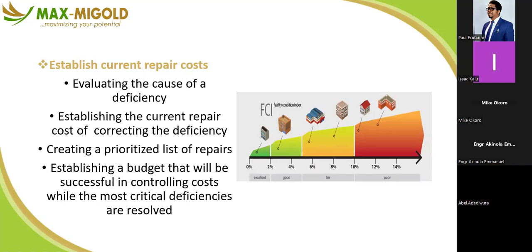You'll be able to prioritize when you do your assessment. Establishing a budget that will be successful in controlling costs while the most critical deficiencies are resolved: when you summarize your assessment, consider cost first — what can you afford now, get those done first. Then defer others to the next two months, three months, or one year.